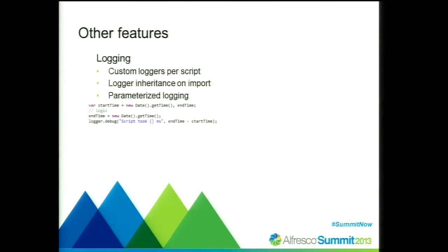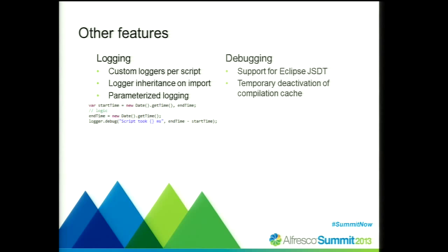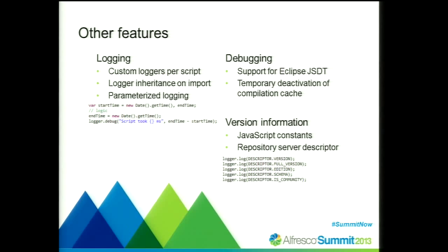Other features included in the script runtime at the moment include enhanced logging — I've replaced the existing logger with a new implementation allowing custom loggers per script, logger inheritance over imported scripts, and parameterized logging so you don't have to concatenate strings before logging them. There's also debugging support — Eclipse JSDT is enabled so you can have remote debugging of JavaScript on the repository from a remote system. And there's also version information, available both in repository and in Share, based on the currently installed Alfresco version.